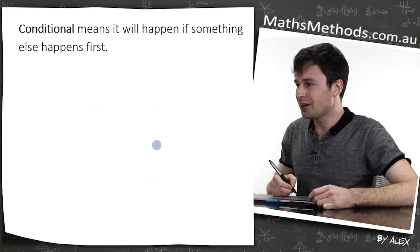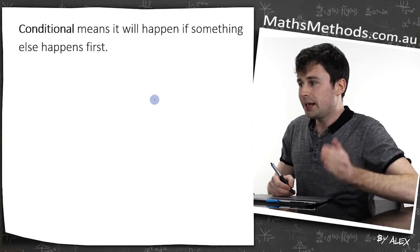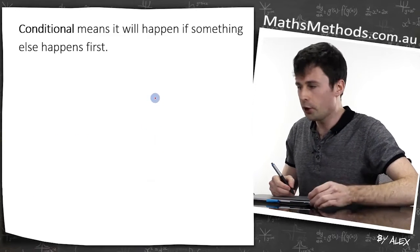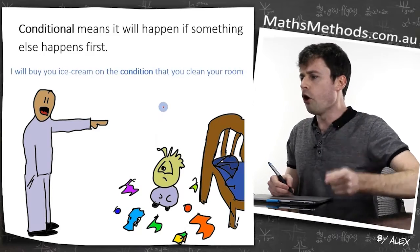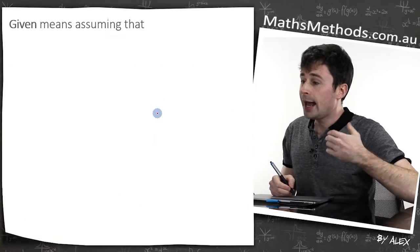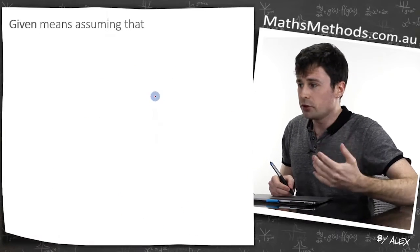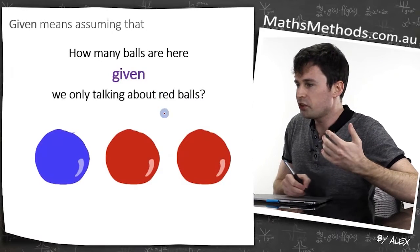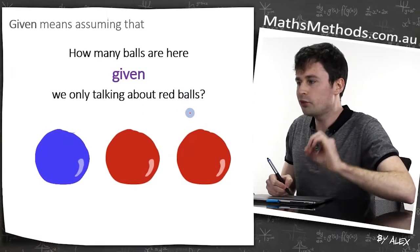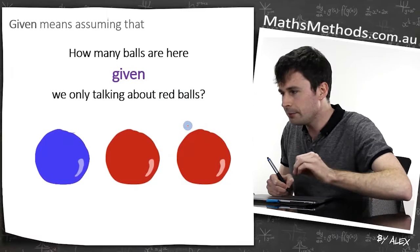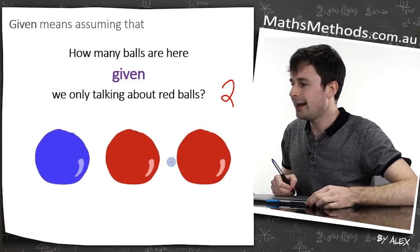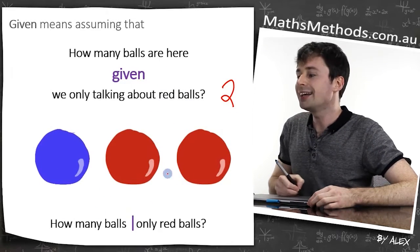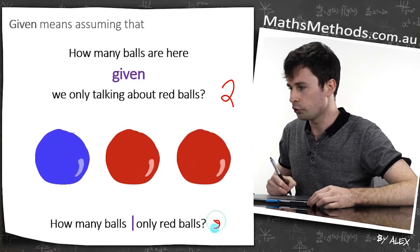So this is conditional probability. Conditional means that it will happen if something else happens first — like, I will buy you ice cream on the condition that you clean your room. The word 'given' means assuming that. For example: how many balls are here, given we're only talking about red balls? The answer would be two. 'Given' has its own symbol.